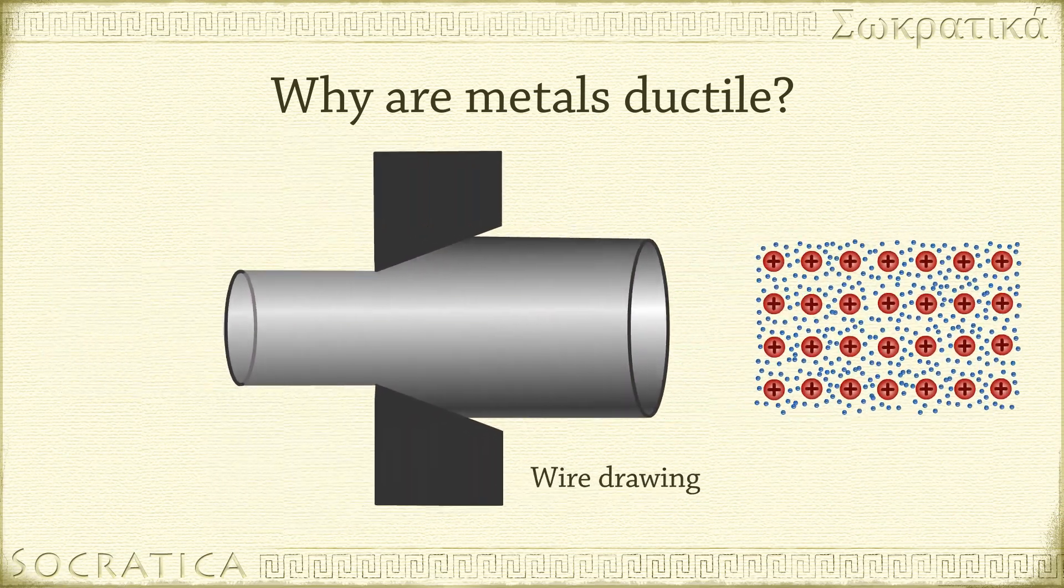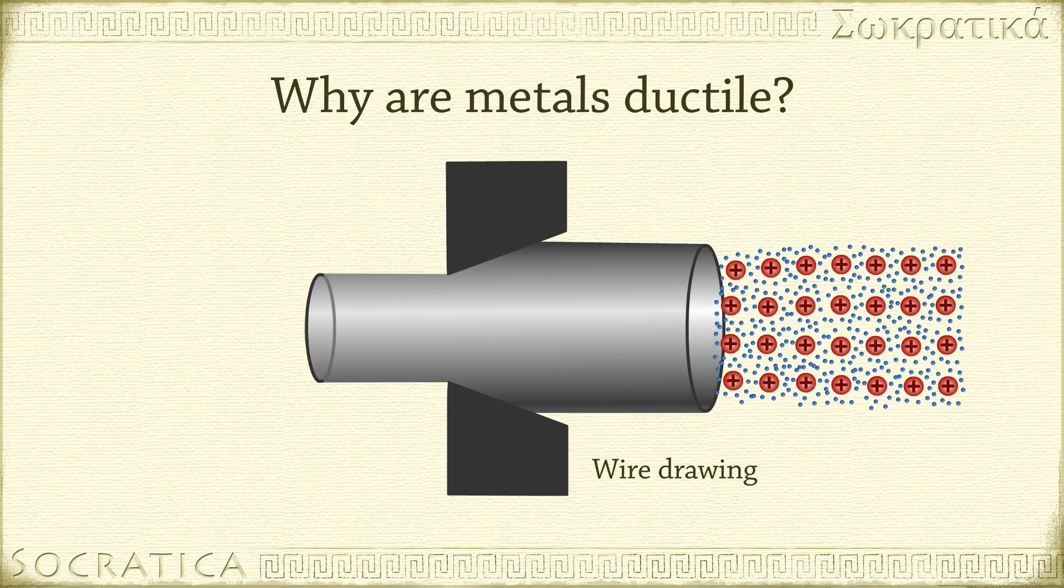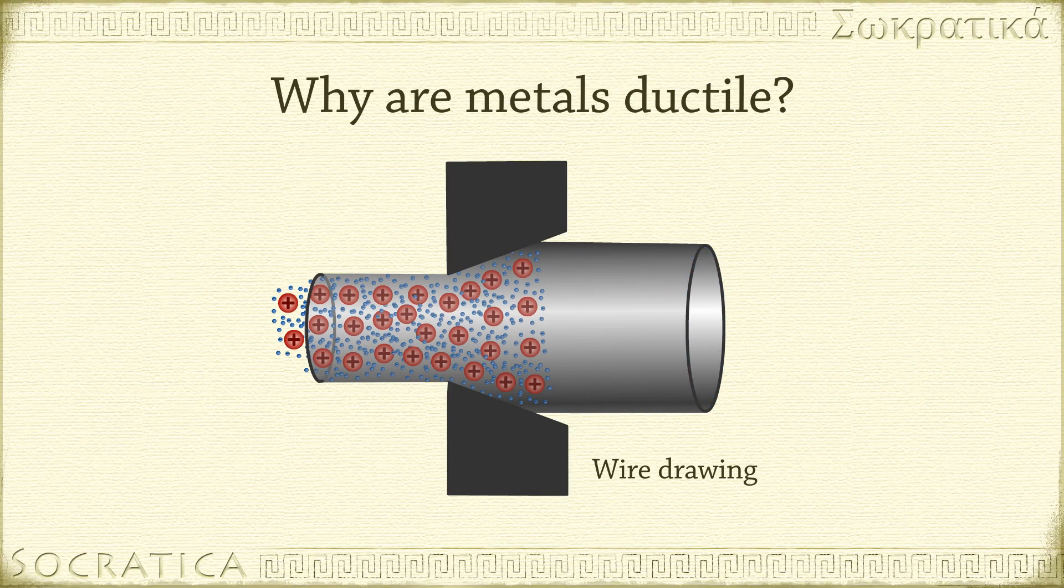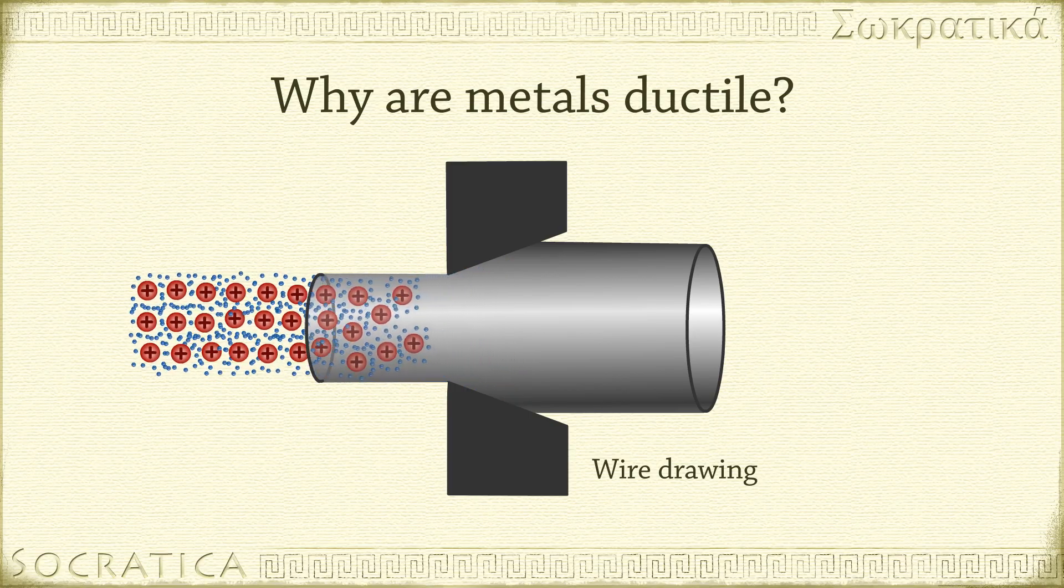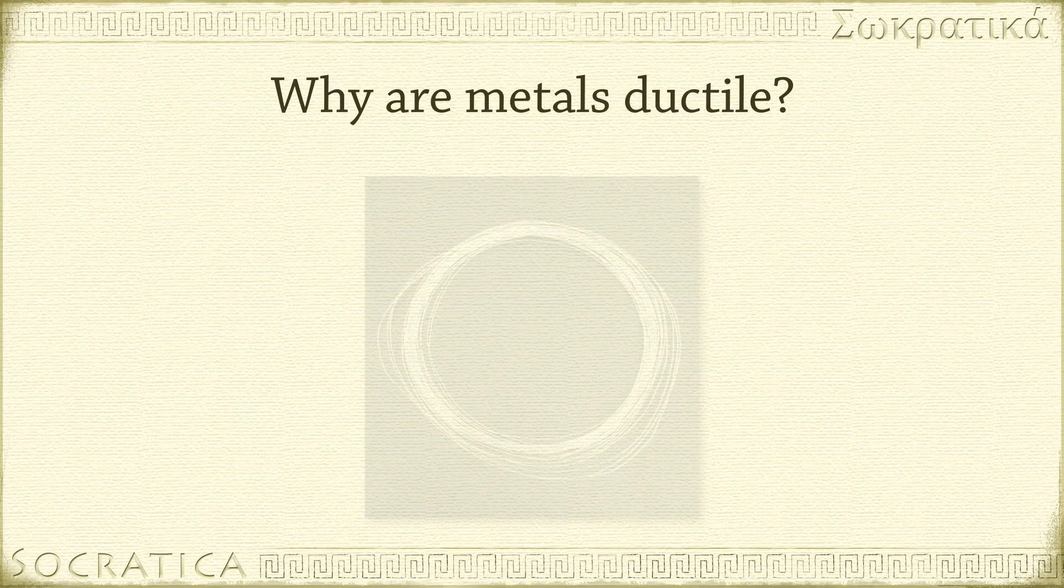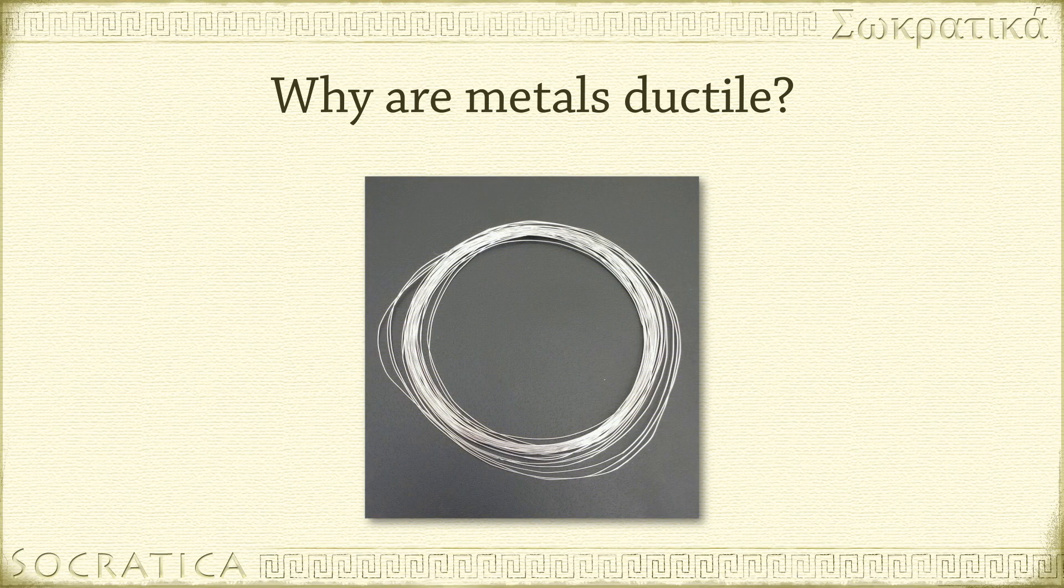In contrast, a metal can be pulled into a long cylindrical shape, because the cations can line up, shielded from each other, as the fluid-like sea of electrons flows around them. The most ductile metal is platinum.